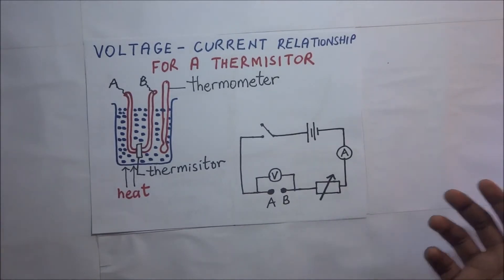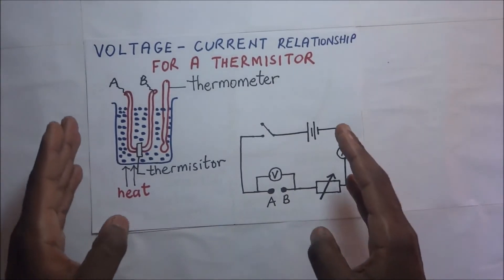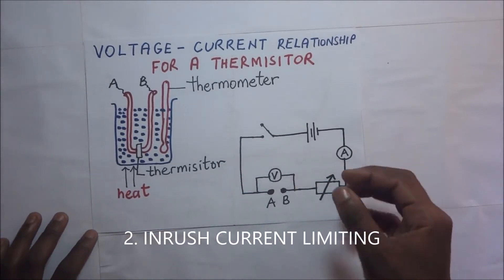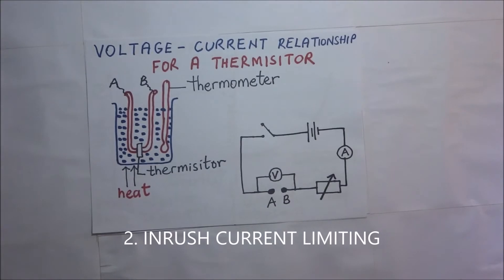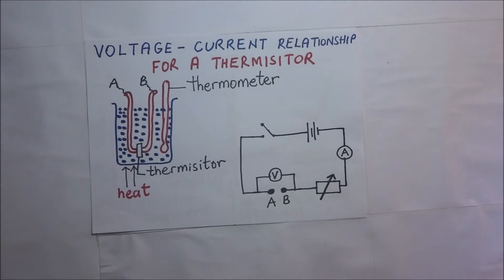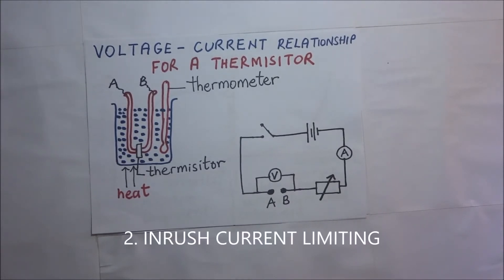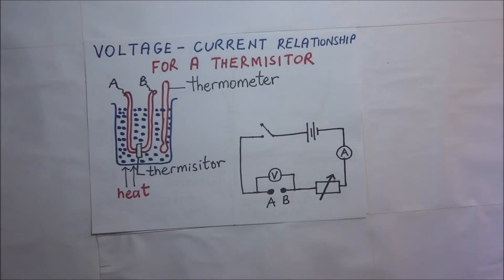We can also use these thermistors for inrush current limiting. What I mean here is that initially we can put a thermistor in a circuit to initially oppose flow of current. Some current is going through it, but it is initially opposing its flow. However, as a result of the current flowing through the thermistor, the temperature of the thermistor rises, and this causes the resistance of the thermistor to drop, letting current flow more easily.